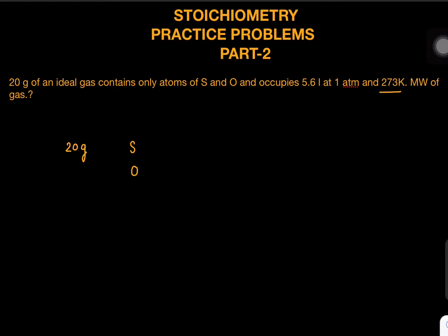Question goes like this: for an ideal gas whose mass is 20 grams containing only sulfur and oxygen, the volume is 5.6 liters, pressure is 1 atm, and temperature is 273 Kelvin. The question is to find out molecular weight of the gas.